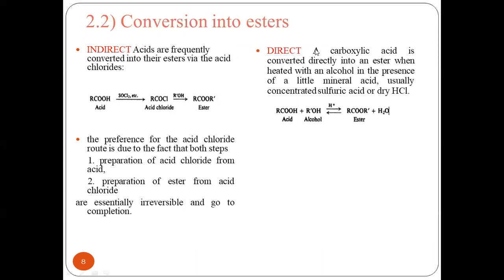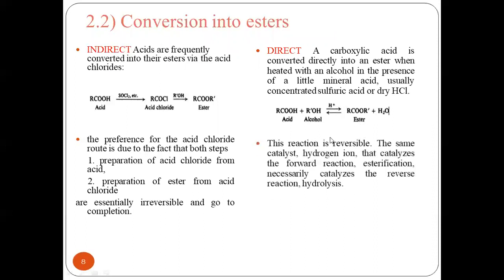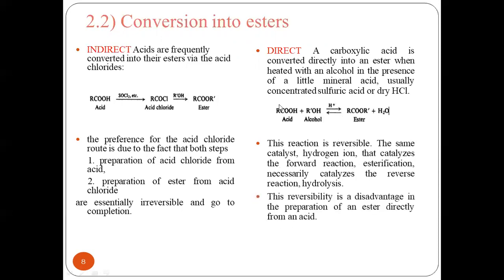In the direct method, carboxylic acids are directly reacted with alcohol in the presence of an acid catalyst to give ester. The biggest disadvantage of this method is that the reaction is reversible — the same hydrogen ion catalyst that catalyzes the forward reaction also catalyzes the backward reaction. So reversibility is a disadvantage. These are the two methods by which carboxylic acids react with alcohols to give esters.